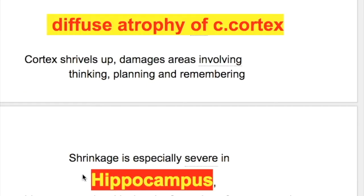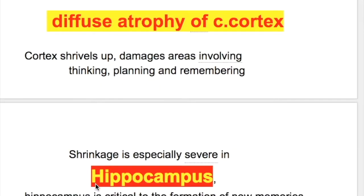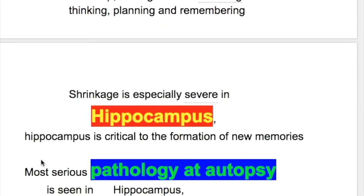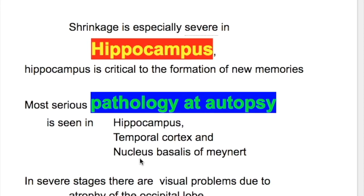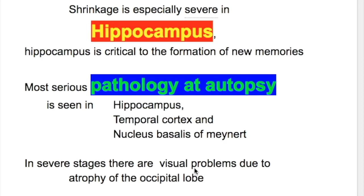Shrinkage is especially severe in the hippocampus, which is critical to the formation of new memories. The most serious pathology at autopsy is seen in the hippocampus, temporal cortex, and nucleus basalis of Meynert. In severe stages, there are also visual problems.